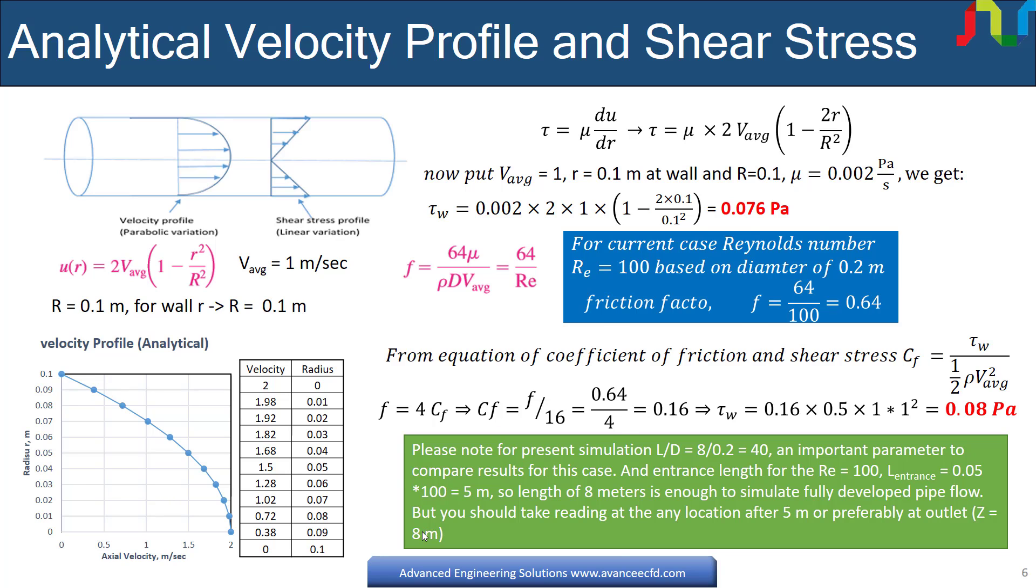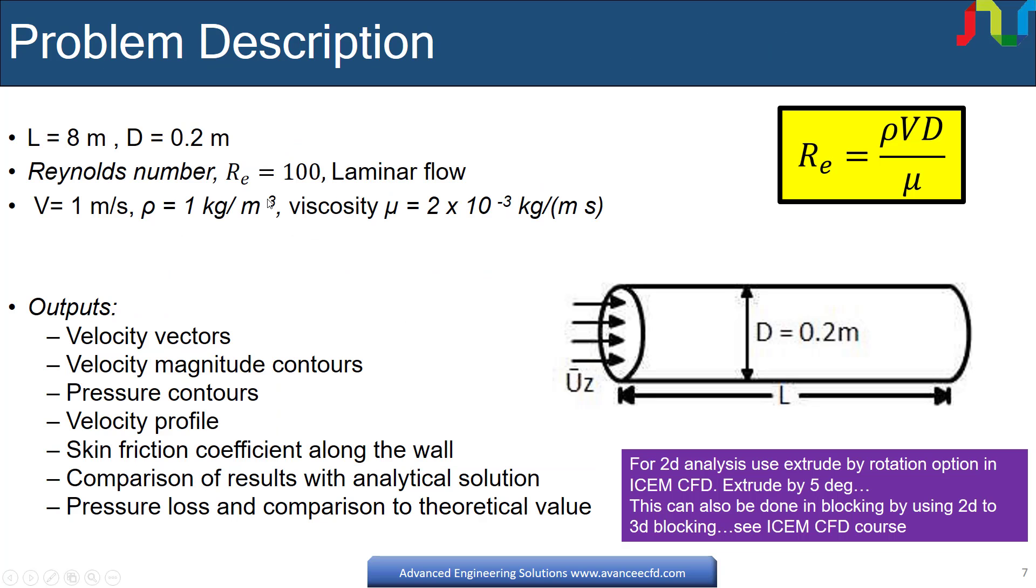We are now in position to give the important parameters for this case. Length is 8 meters. Diameter is equal to 0.2 meter. We will take average velocity equal to 1 meter per second. Density is 1 kilogram per meter cube. Viscosity can be calculated from Reynolds number formula by putting these values and Reynolds number equals 100. We have viscosity is equal to 0.002 pascal second.